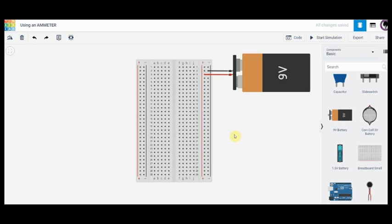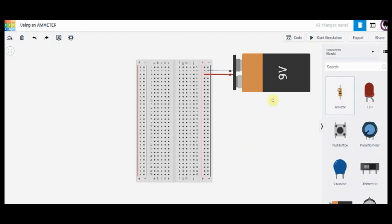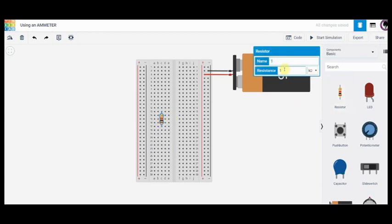You can see I've got a breadboard and I've got a 9-volt battery hooked up already and what I'm going to do is I am going to put in a single resistor and I'm going to pick a resistance of 4.5 kilohms which is 4,500 ohms.